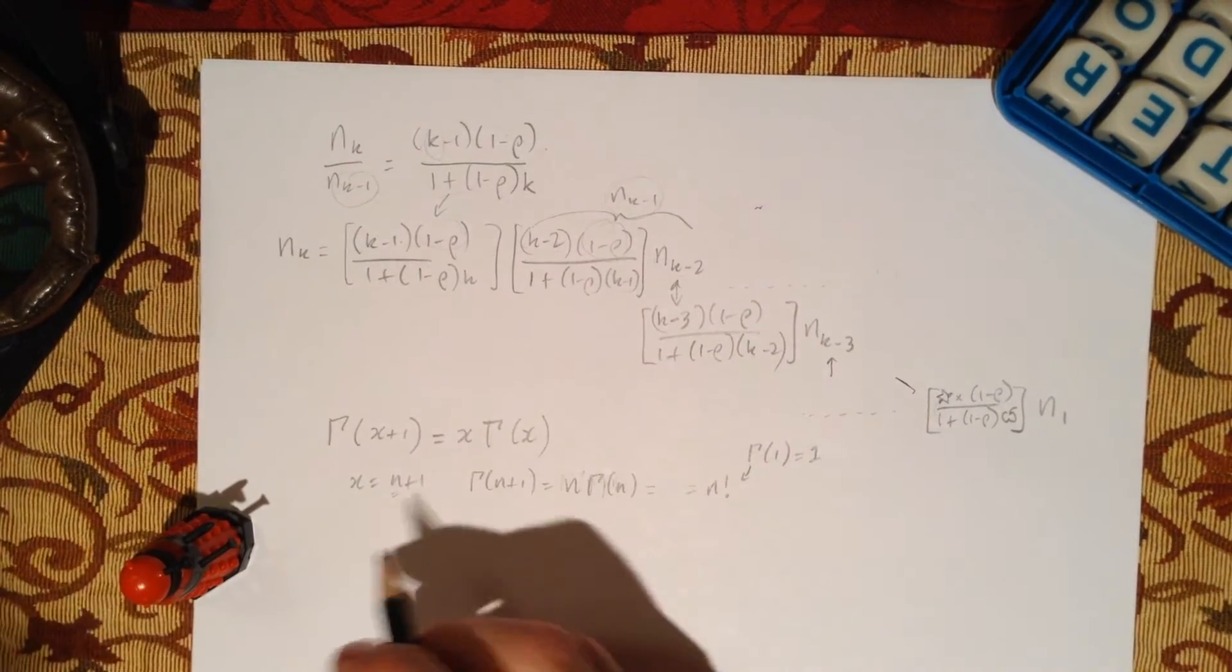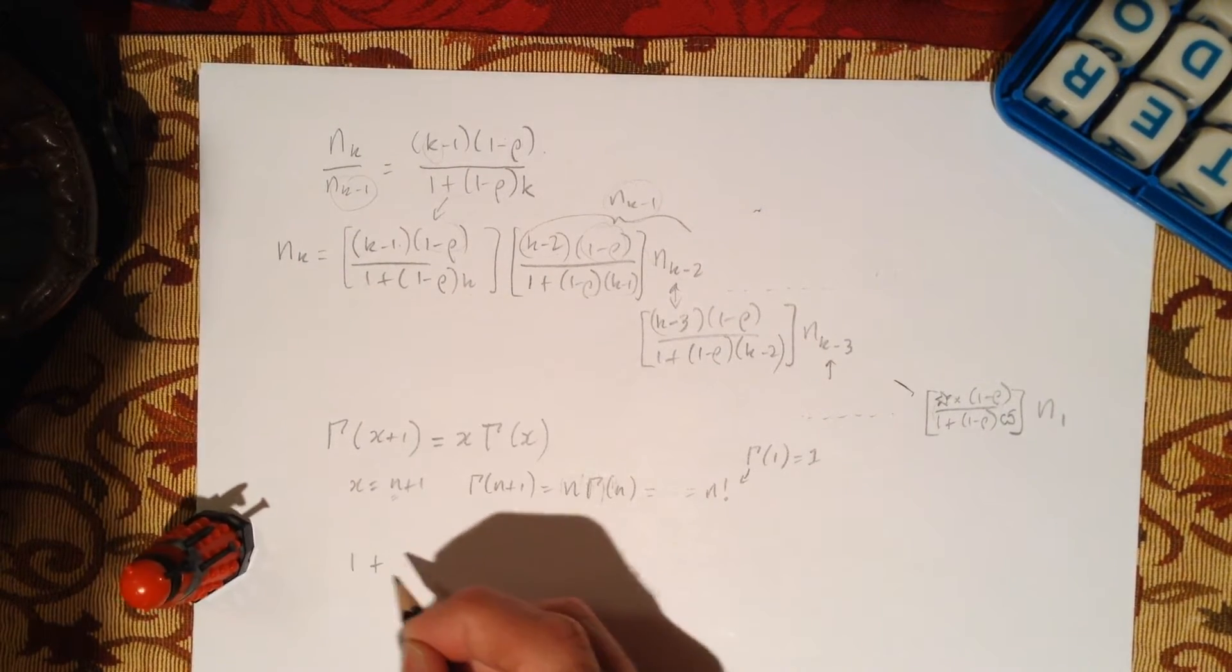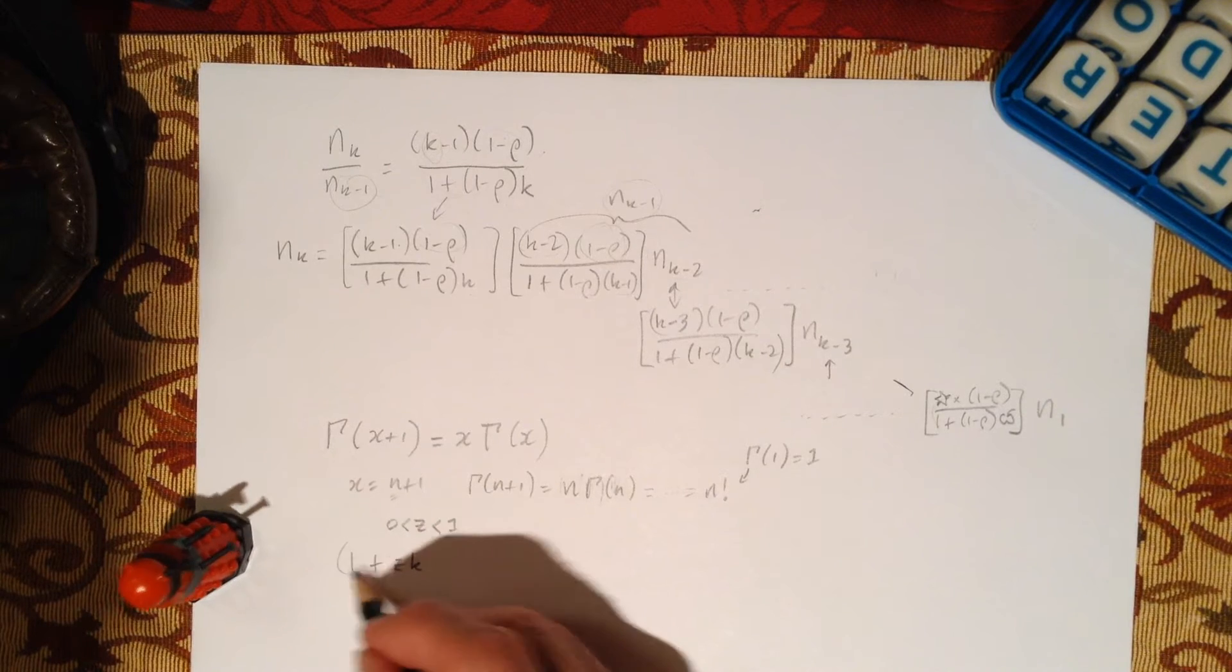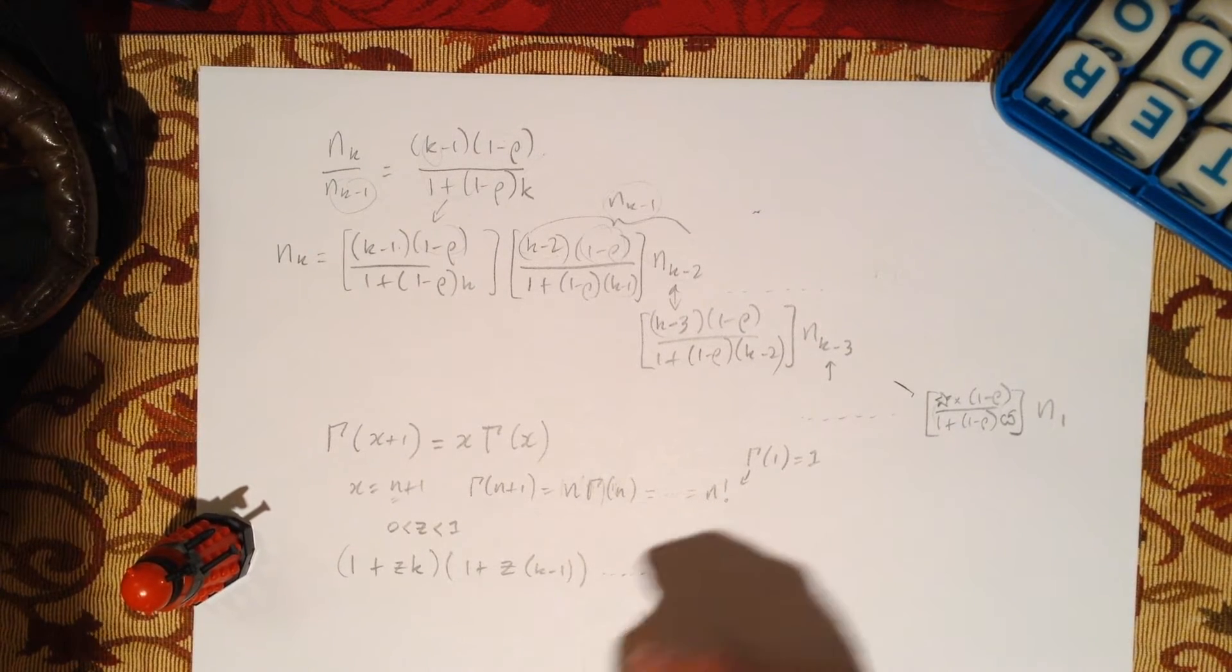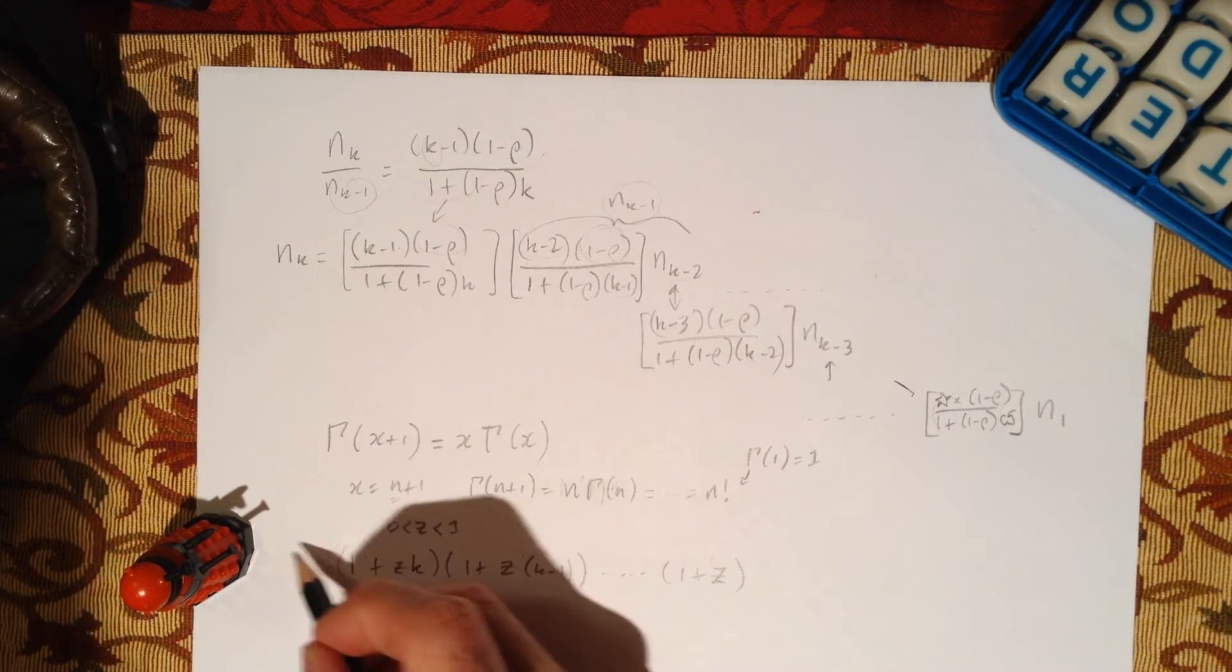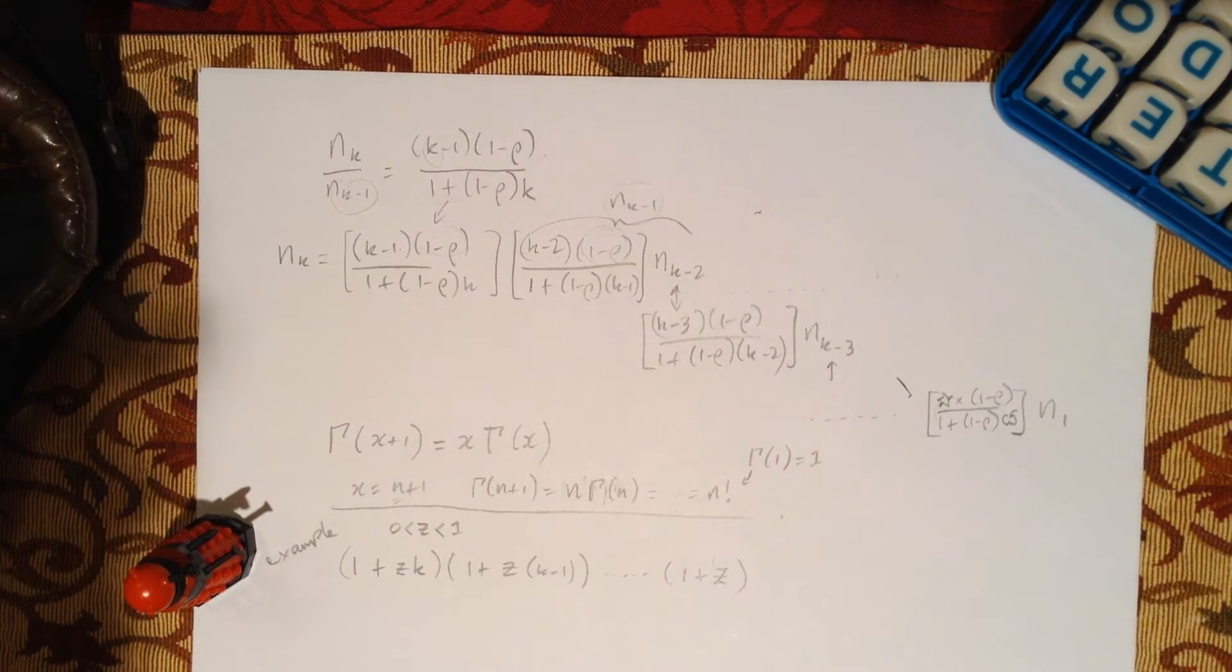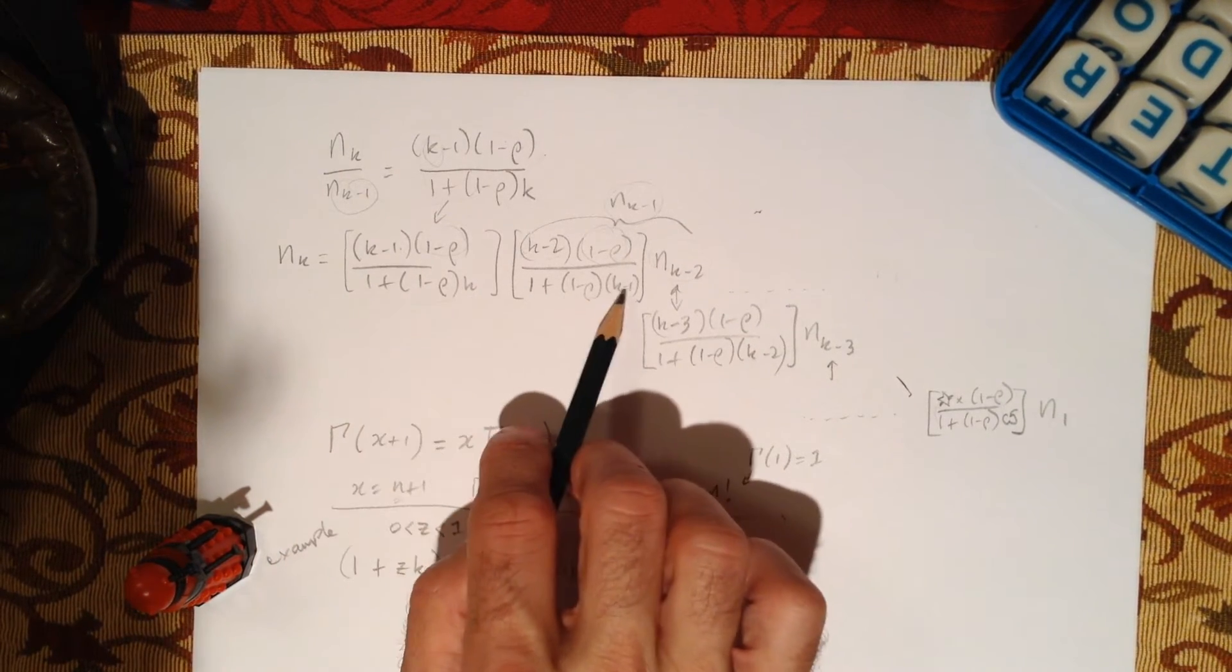It is the generalization of the factorial and it's very useful in a lot of different ways, really a beautiful thing. If you have something like this: 1 plus, let's call it a fraction, 1 plus zk, where z is small, between 0 and 1 just for fun, could be any fraction, but that's the case here. Then we have 1 plus zk times 1 plus z(k minus 1), and that keeps going down to, let's say, 1 plus z. This could be 2z depending on what's going on. This is an example of how we treat this thing.